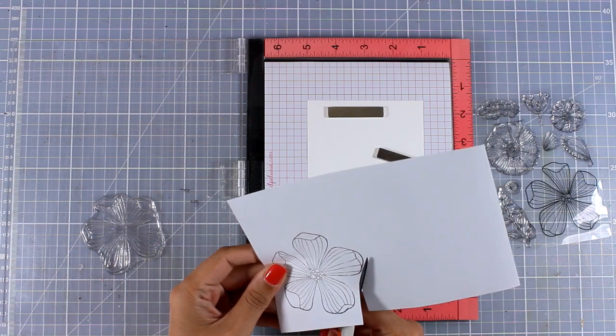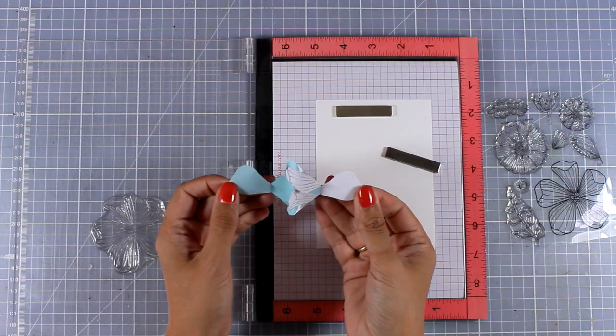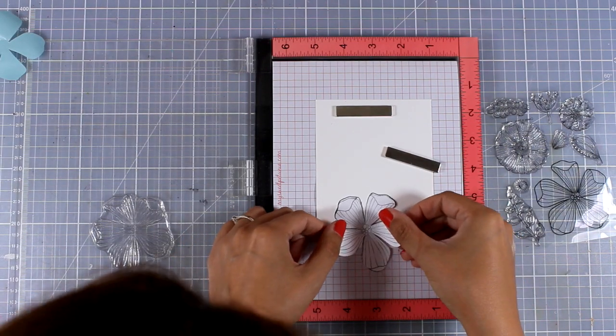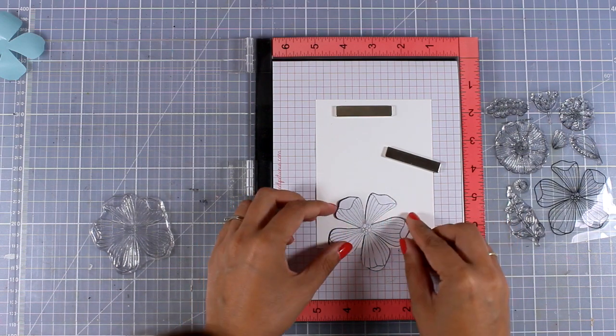I'm going to peel off the backing of my mask and then I'm going to place it on top of my stamped flower. Also, when you cut out your mask, make sure that you stay just inside the black line.